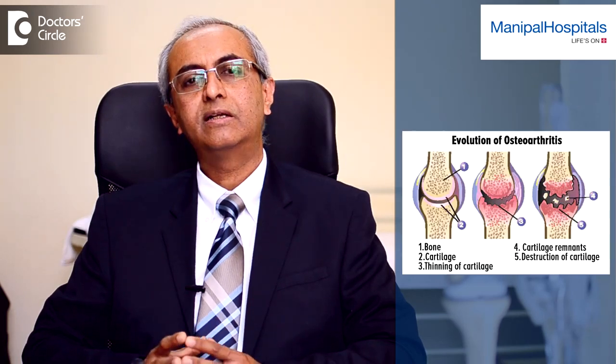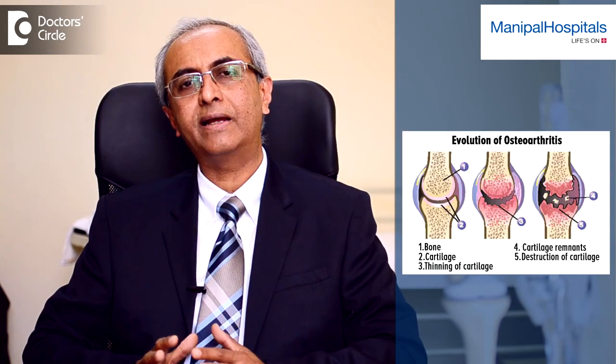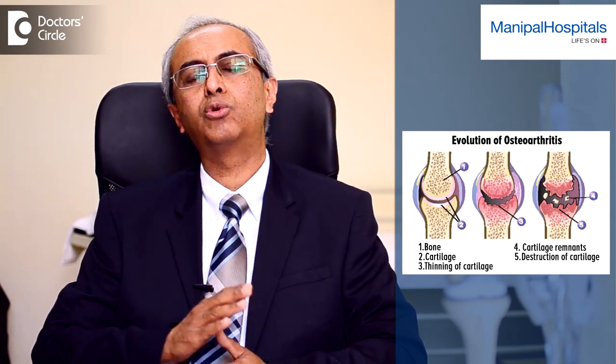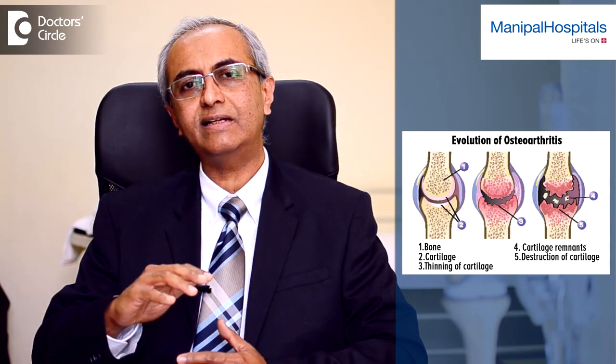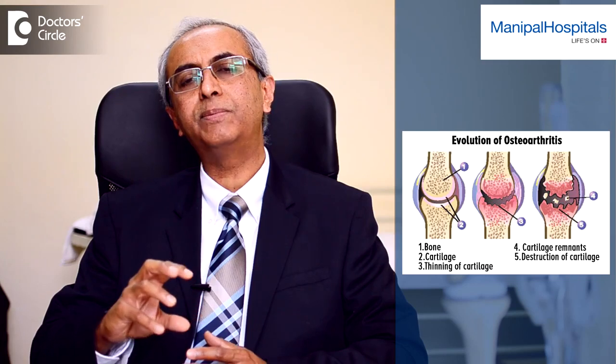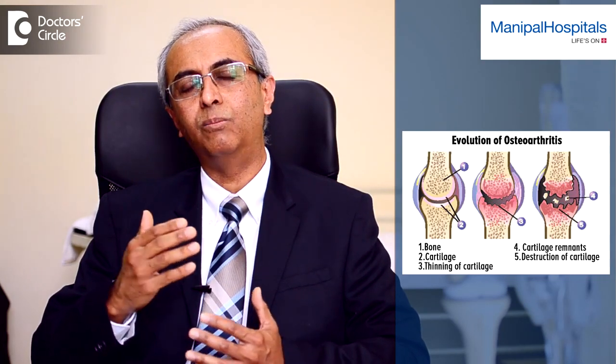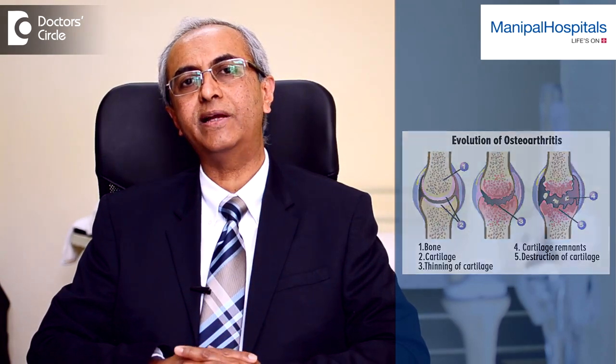In Osteoarthritis, the cartilage of the knee loses its smooth properties, becomes rough, cracked, and will eventually break down so that the bone underneath the cartilage gets exposed. The cartilage also becomes thinner — comparable to potholes forming on a road — starting with small cracks and surface irregularities, progressing to complete loss of cartilage, exposed bone, narrowing joint space, and joint deformity.